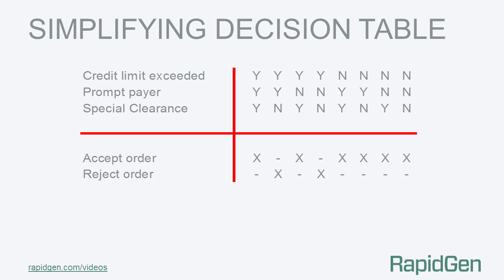This is our simplifying rule. Any two rules which have identical entries except for one condition row which contains a Y and N may be consolidated into one rule which contains a dash in place of the Y and N. Obviously the rules must have the same action.